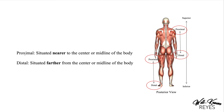Next, we have proximal and distal. Proximal means situated nearer to the center or midline of the body. For example, the shoulders are proximal — closer to the midline — than the tips of the fingers. Distal means further from the center or midline of the body. The ankles are more distal than the hip, because the hips are really close to that invisible midline.